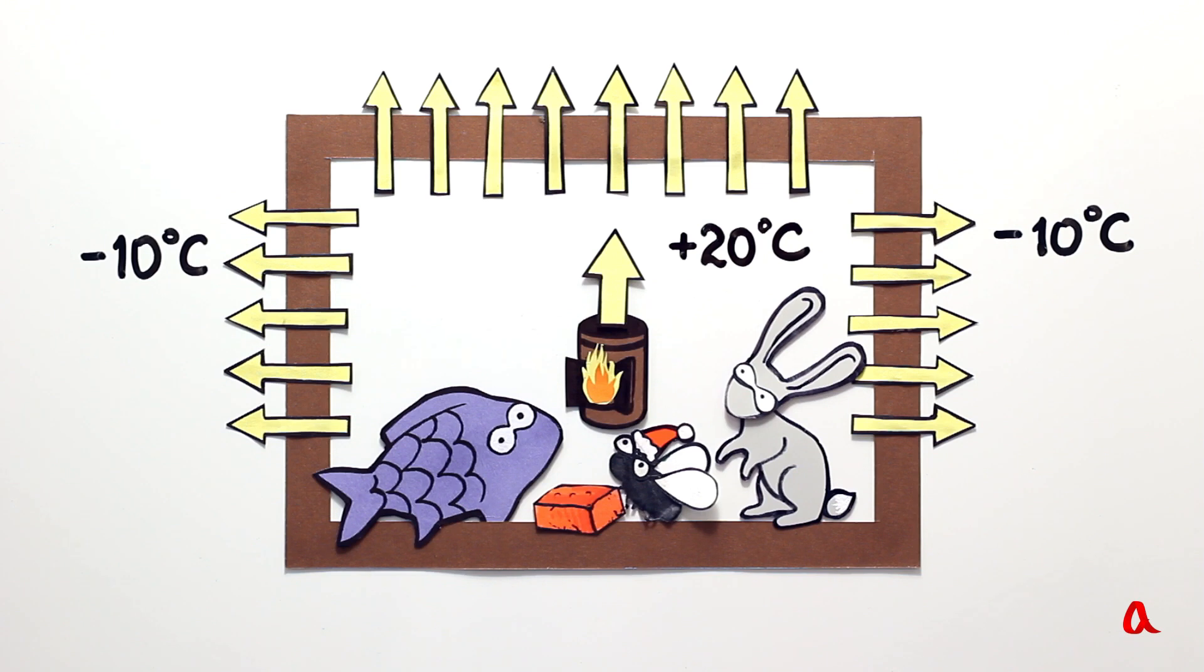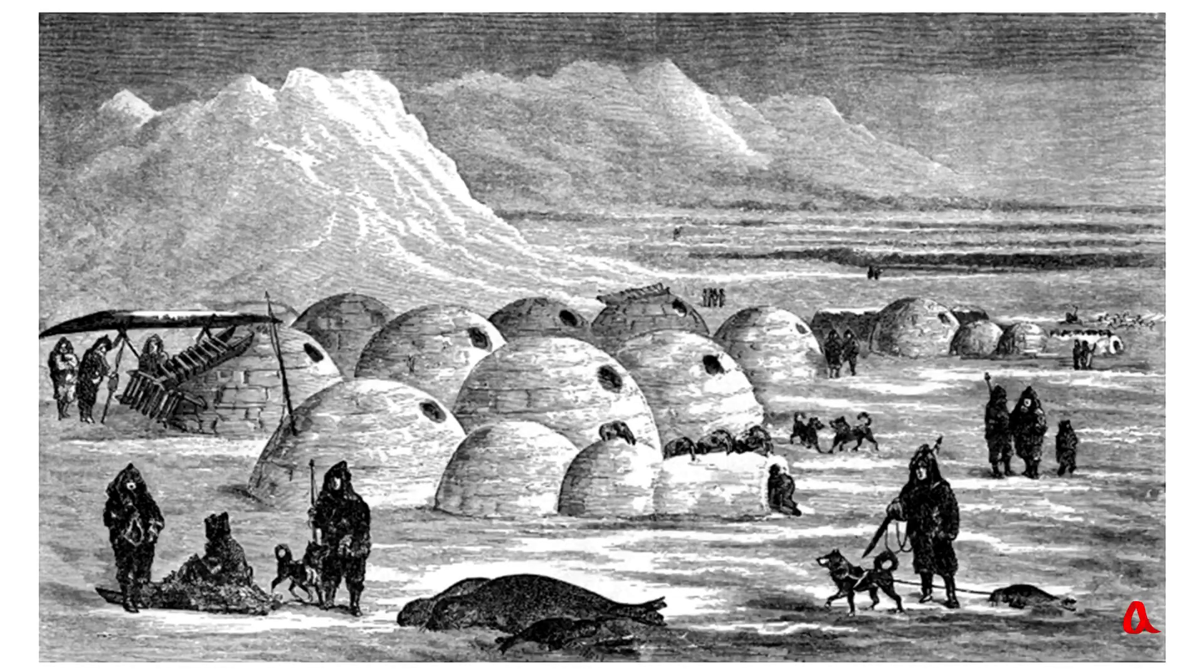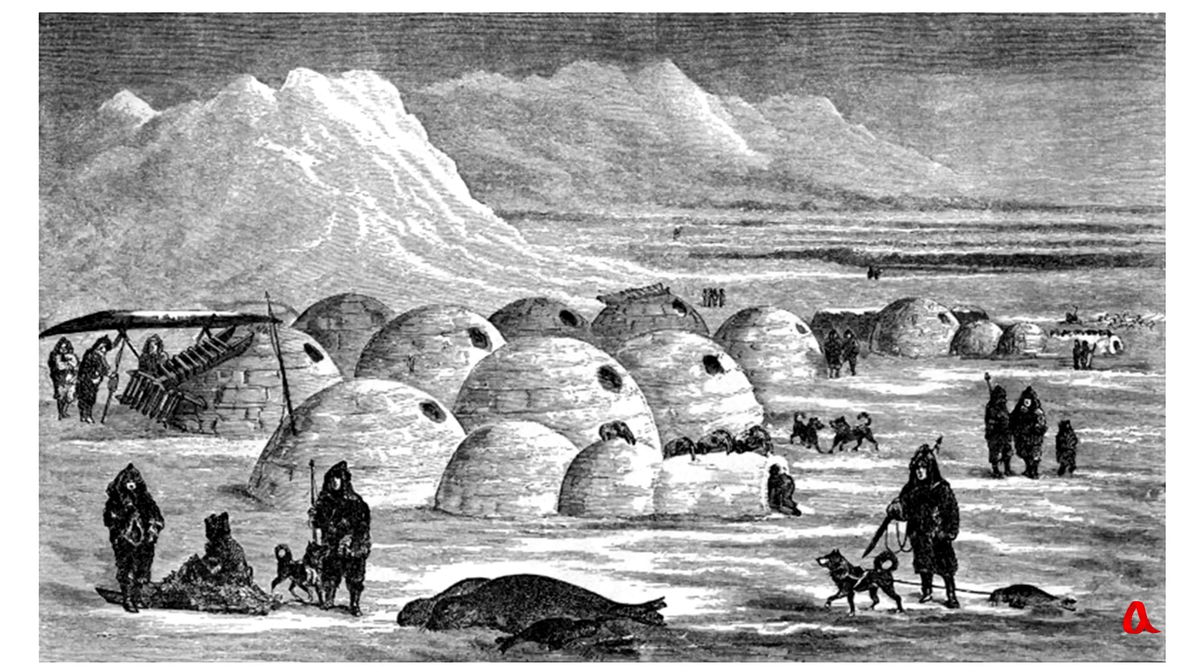By the way, snow is a fine heat insulator. It covers the ground in winter and doesn't allow it to get frozen through. In an Eskimo hut called Igloo, one can take off his clothes and feel comfortable.